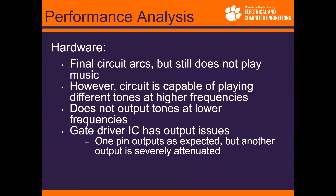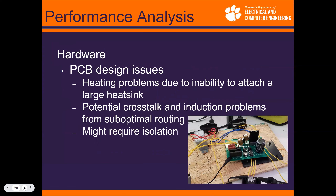For our performance analysis and final results, the final circuit arcs but still does not play music. The arcs are a little smaller than expected because we can't input high enough voltages due to noise issues. However, the circuit is capable of playing different tones at certain frequencies using a function generator, though it has problems at lower frequencies — anything below a kilohertz is hard to hear, likely due to circuit noise. Additionally, our gate driver IC has output issues: one pin output works as expected but another is severely attenuated. We also have PCB design issues — the routing makes it difficult to attach heat sinks, so some components get warm, and non-optimal routing introduces potential crosstalk, which is a significant noise source that may require isolation to fix.